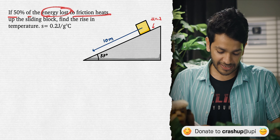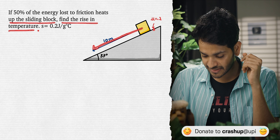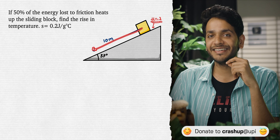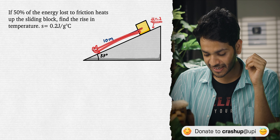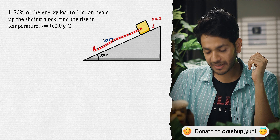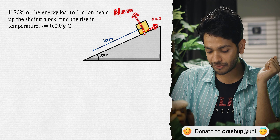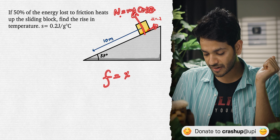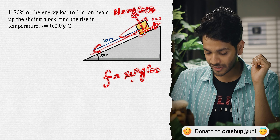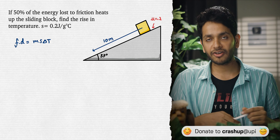Another problem on an incline: if 50% of friction energy heats the sliding block, find the rise in temperature. The block slides down, friction acts backward. Normal reaction N = mg cosθ, so friction force = µmg cosθ. The work done by friction is f × d = µmg cosθ × d. Half of this equals ms∆T. Pause and solve.